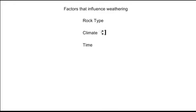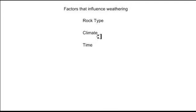This brings us to the second factor: climate. The chemical weathering reactions require water, so in dry climates chemical weathering is greatly suppressed. In humid or tropical climates, there's plenty of water and chemical weathering proceeds at a faster rate. Climate also affects physical weathering — freeze-thaw weathering, for example, requires a seasonally cold climate to be an important factor.